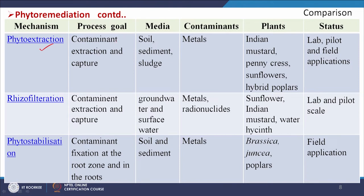Comparing phytoremediation methods: phytoextraction targets contaminant extraction and capture from soil or sediments, with metals as contaminants; suitable plants include Indian mustard, pennycress, sunflowers, and hybrid poplars, at lab, pilot, and field application stages. Rhizofiltration targets contaminant extraction from groundwater and surface water, focusing on metals and radionuclides, using sunflower, Indian mustard, and water hyacinth. Phytostabilization achieves contaminant fixation at the root zone, with field applications demonstrated.